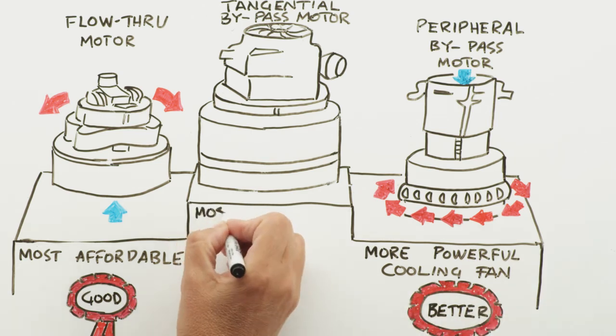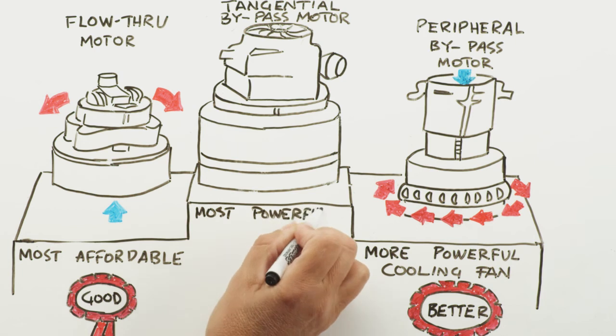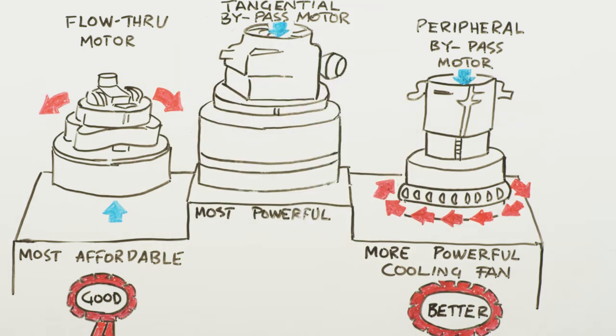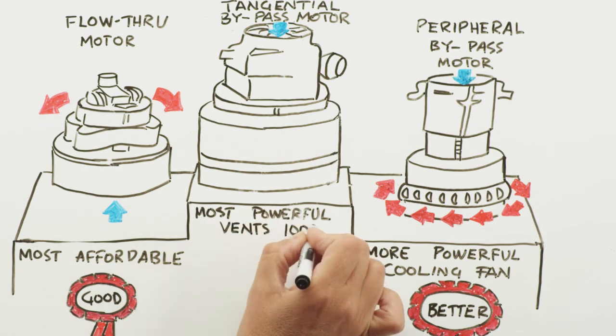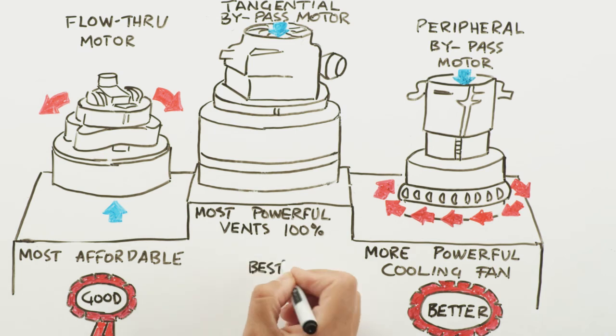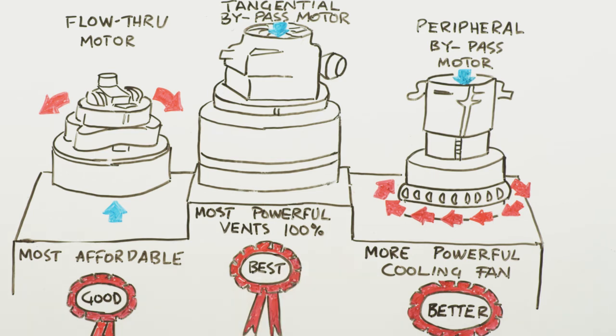The third type of motor is a tangential bypass motor. This motor is the largest, most powerful, and generally the most reliable. Dedicated clean air cools the motor, while the tangential exhaust expels all heated, dirty air from the motor chamber. This motor can vent 100% of allergens and pollutants out of your home. This is by far the best option.